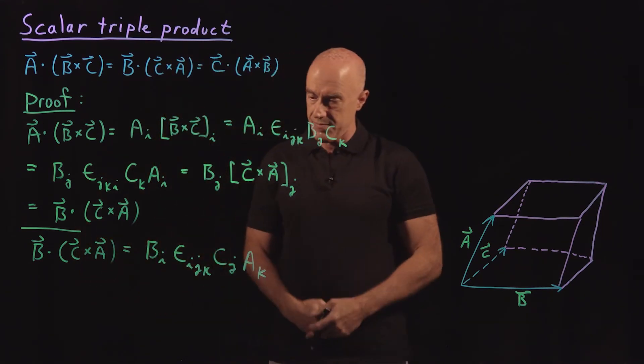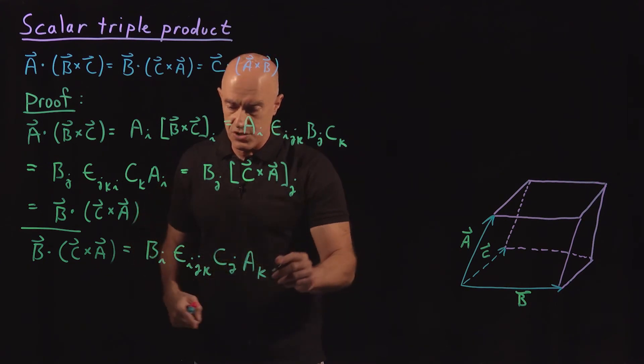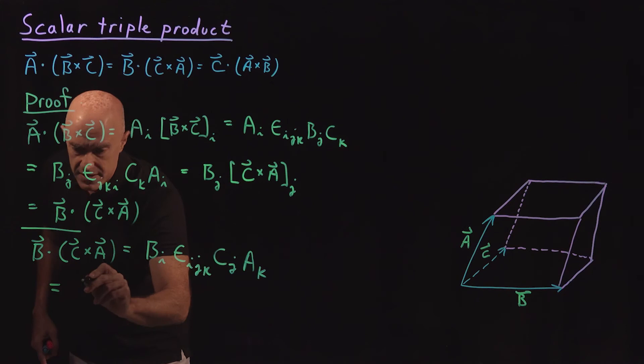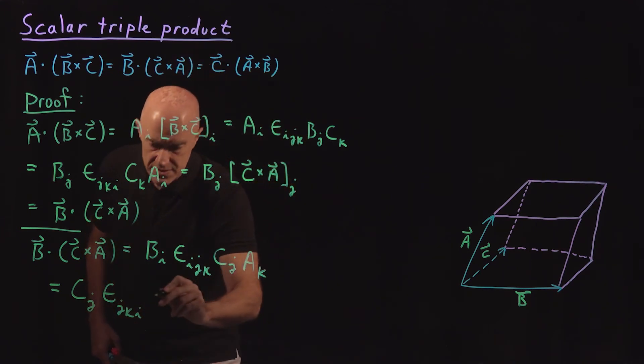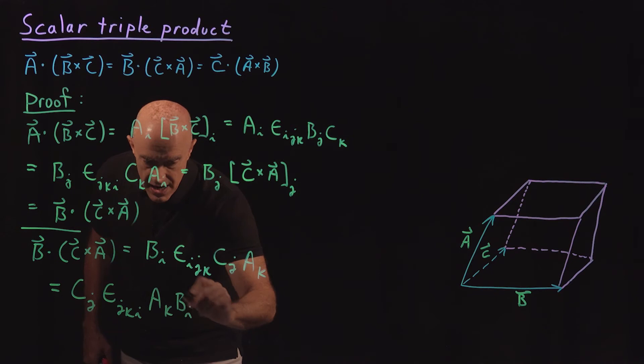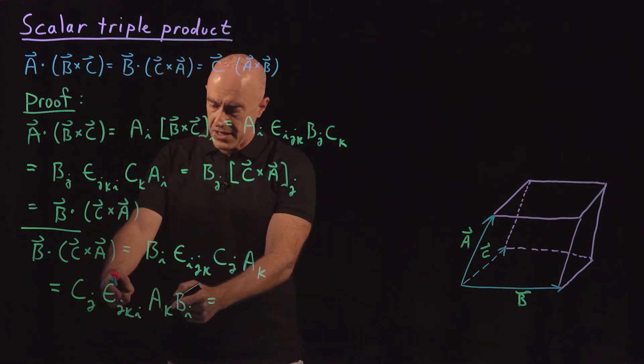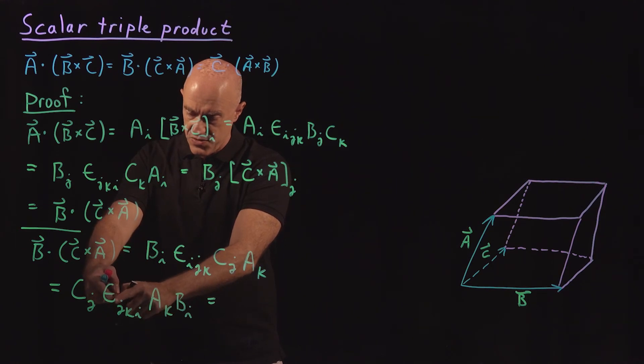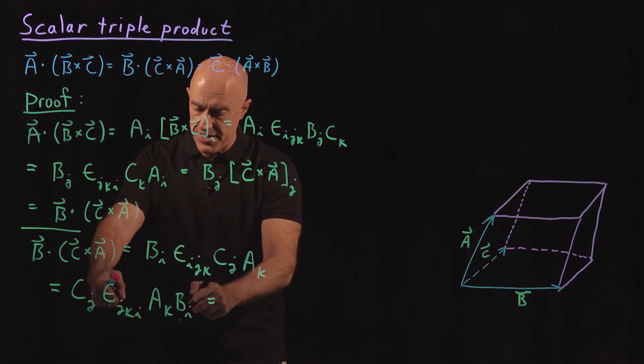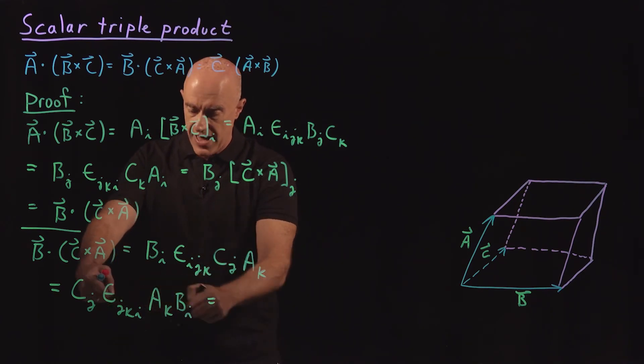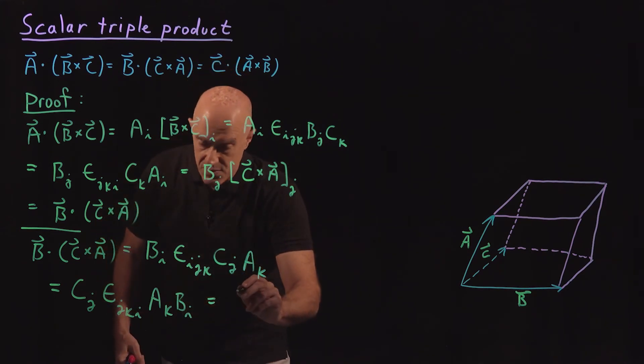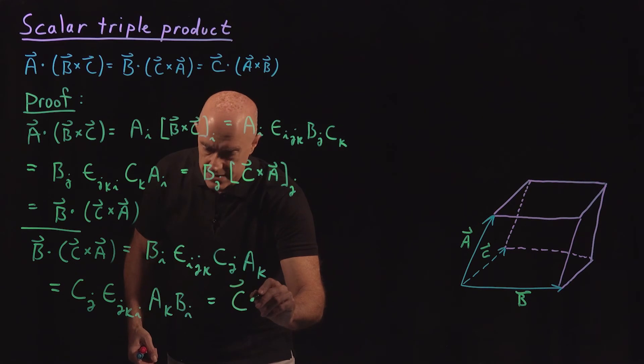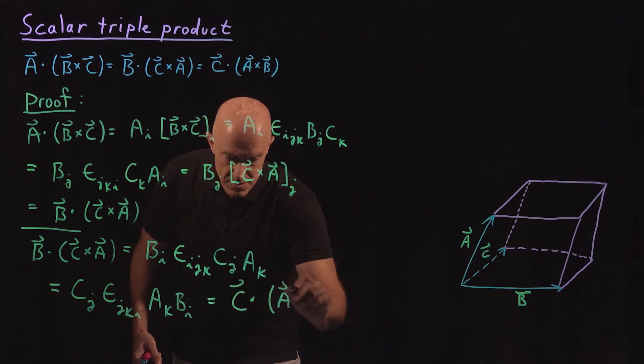So I would jump a step. And then we would use the cyclical nature. So I would want C in the front, so we would have C_J, and then I would have an Epsilon, so I would have Epsilon J, K, I. And then I want an A and a B, so I would have an A_K, B_I. And then immediately I would see that this would be Epsilon J, K, I, A_K, B_I is the Jth component of A cross B. So we would have C_J times the Jth component of A cross B, so that would immediately give us C dot A cross B.